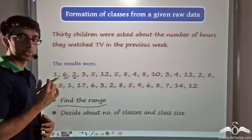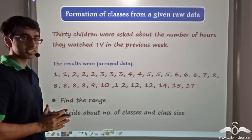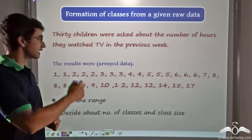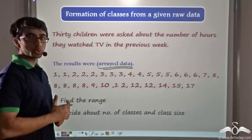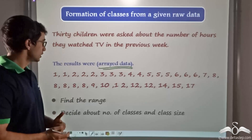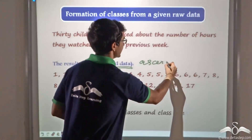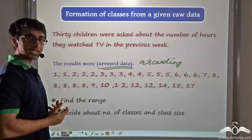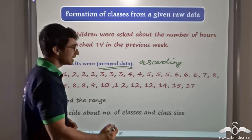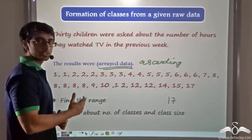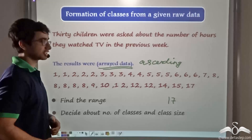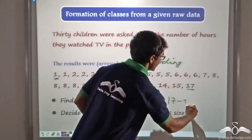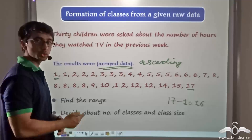The first thing to do is to arrange the given data in some particular format. So I convert the raw data into array data — that is, I arrange it in ascending order from the least value to the highest value. Now it will be very easy to find out the range. The range is nothing but the maximum value of the observations minus the minimum value. So it will be 17 minus 1, which equals 16.